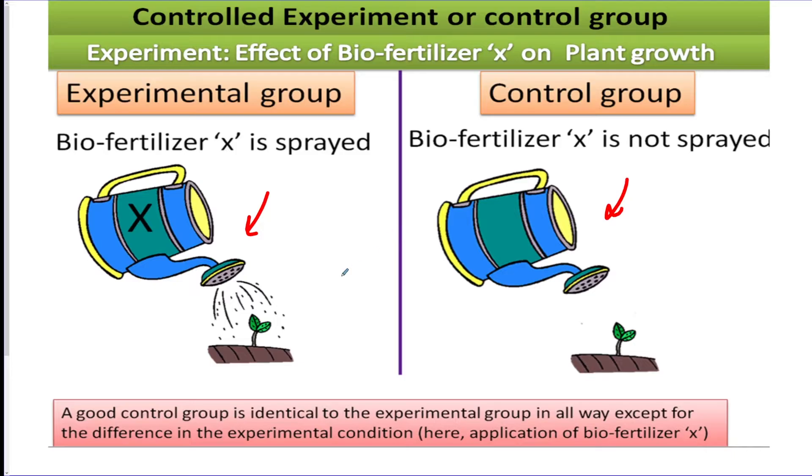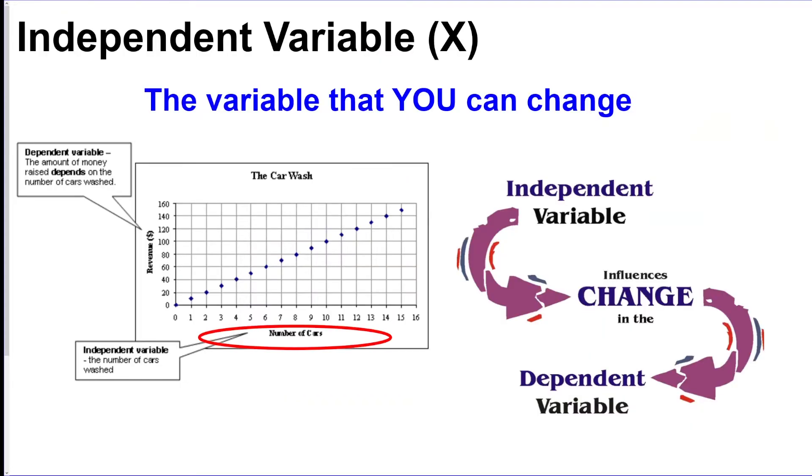So what's the difference between these two? Only the fertilizer. Everything else in the experiment has to stay constant. That means the soil has to be the same, the plant has to be the same, the amount of sun, the amount of water that people do in the experiment, because you don't want any other variables besides the one that you're testing.